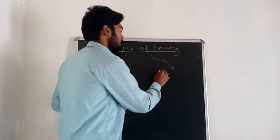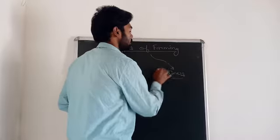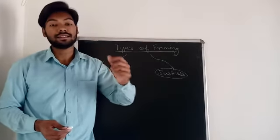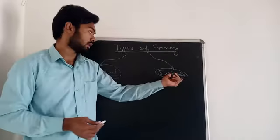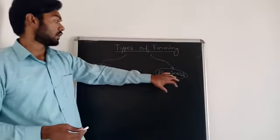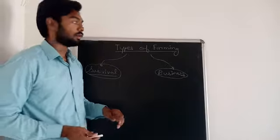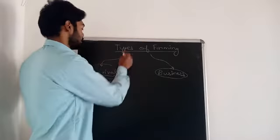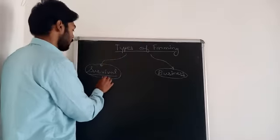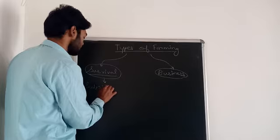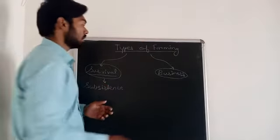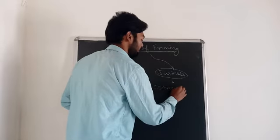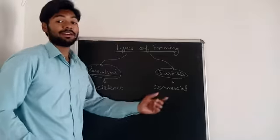The next thing is we can also do farming for business or for earning money — we will grow food, do farming, and sell it to people who are not in the farming industry. The official names given to these two types are: farming done for survival is called subsistence farming, and farming done purely for business or earning money is called commercial farming.